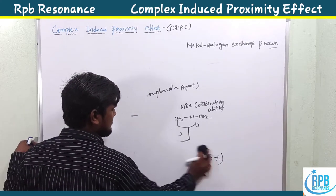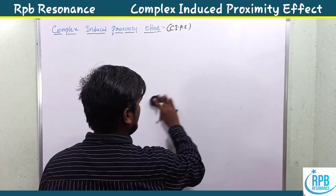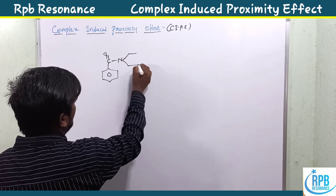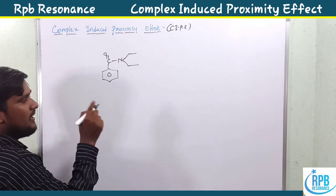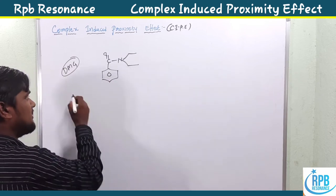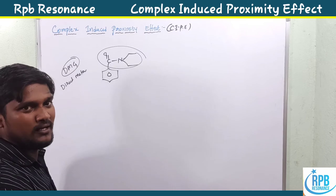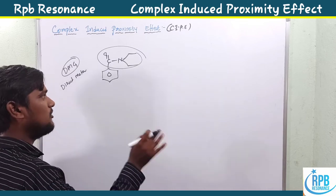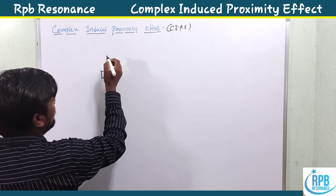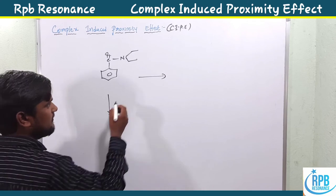Now let's discuss some examples. In the case of CONRu₂ — this is nothing but a DMG (directed metalation group) — any group in the form of CONRu₂, CONHRu, SO₂NRu₂, or ORu₂ are simply known as DMG. These groups readily exhibit the CIPE effect.